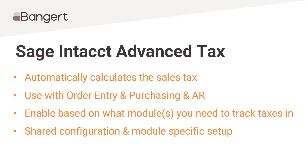Our main focus is going to be using it through the transaction definition module — through the setup of order entry and the purchasing module. You can also set up sales tax directly in accounts receivable, but for construction business cases, if you need to track sales tax, it's going to flow through either order entry and/or purchasing. So even your construction billings and free form invoices on the accounts receivable side are going to happen through the order entry setup.